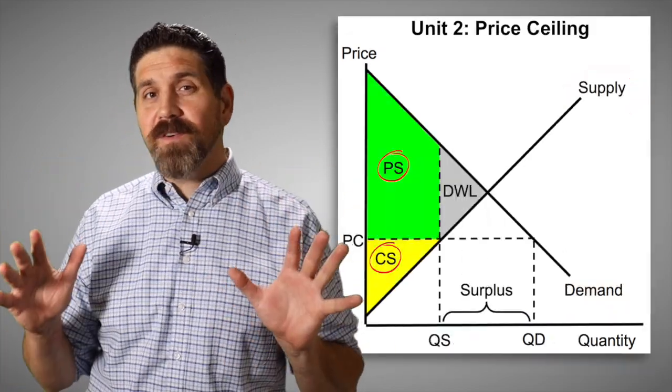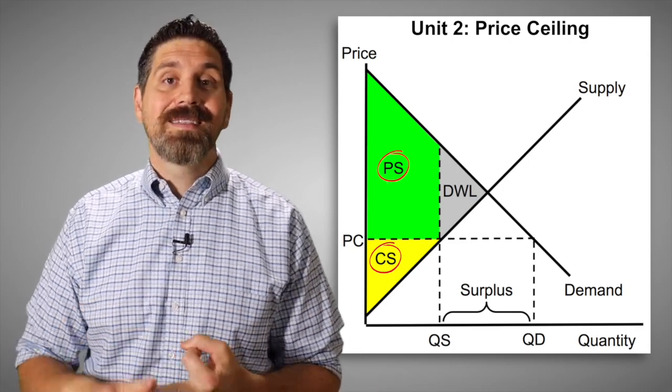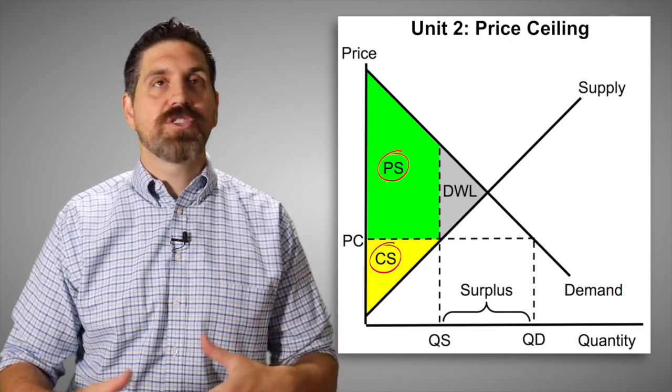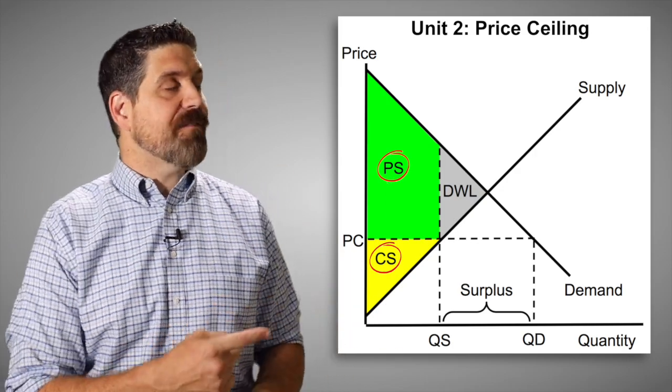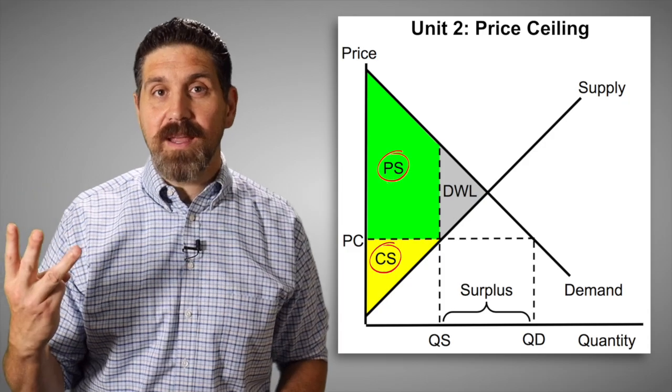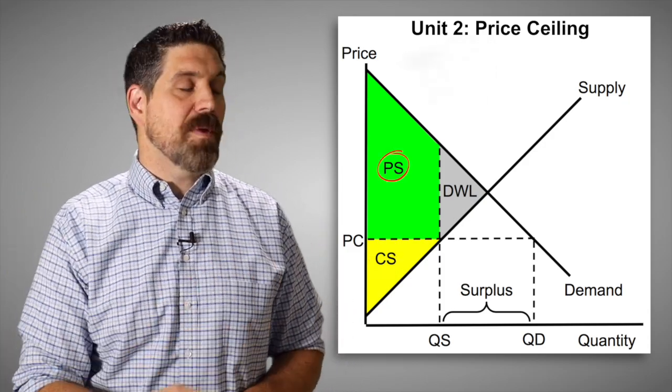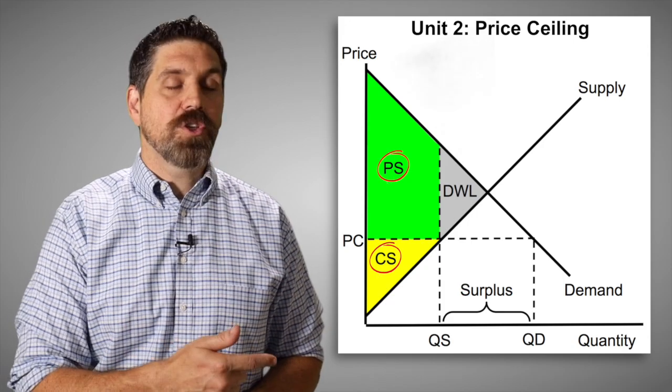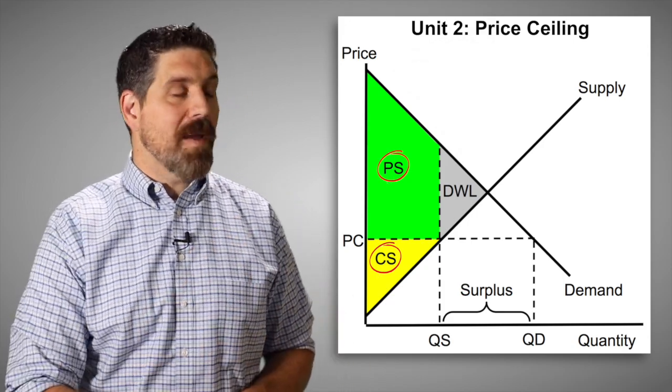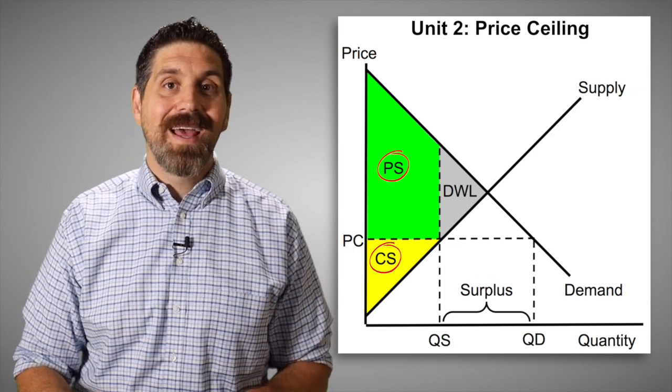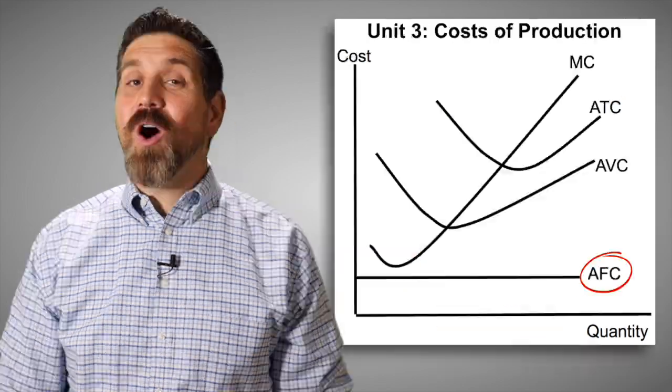In microeconomics, you've got to know all the different variations of supply and demand. You know, ceilings, floors, taxes, subsidies, quotas, so many different ways of drawing this graph. You've got to know it. With this graph of a price ceiling, there are three mistakes. First, notice that consumer and producer surplus are mislabeled. This one should be consumer surplus. This one should be producer surplus. So that's wrong. Now the rest of the labeling is correct. We've got downward sloping demand, supply, quantity demanded, quantity supplied. Those are all correct, except this is not a surplus. This creates a shortage.